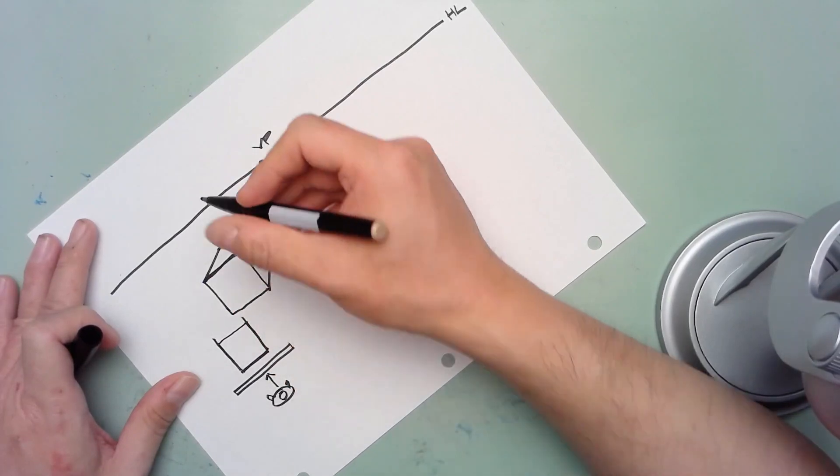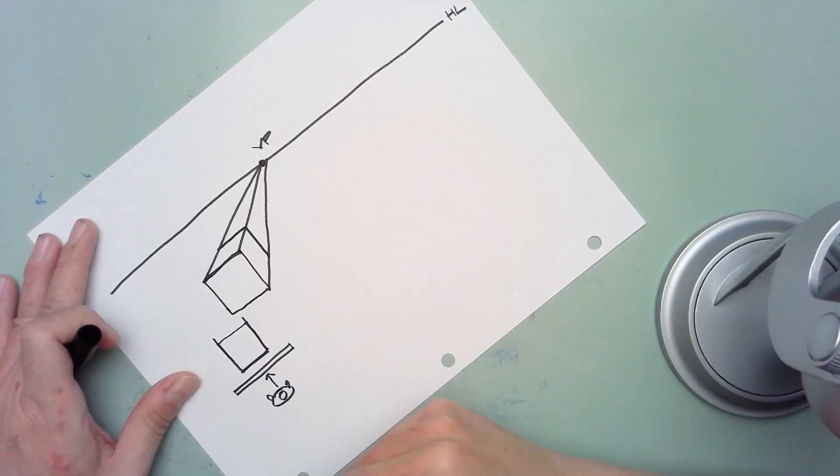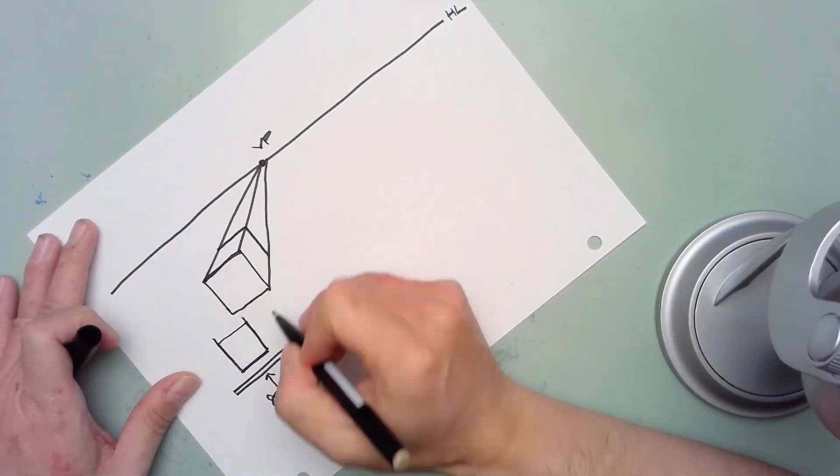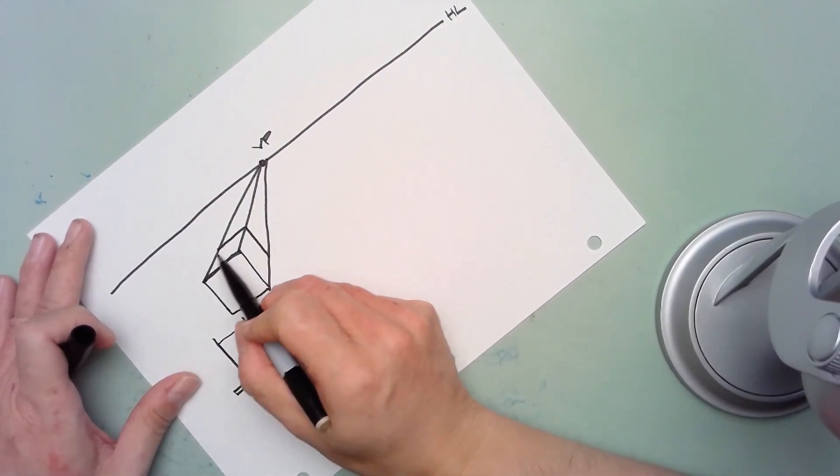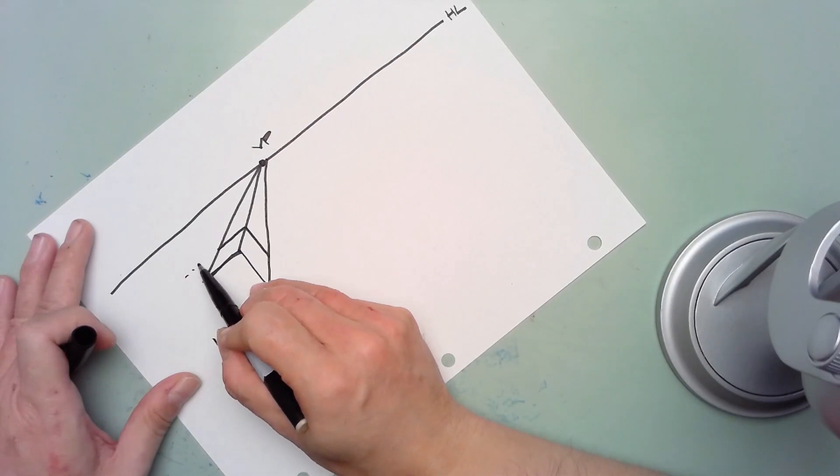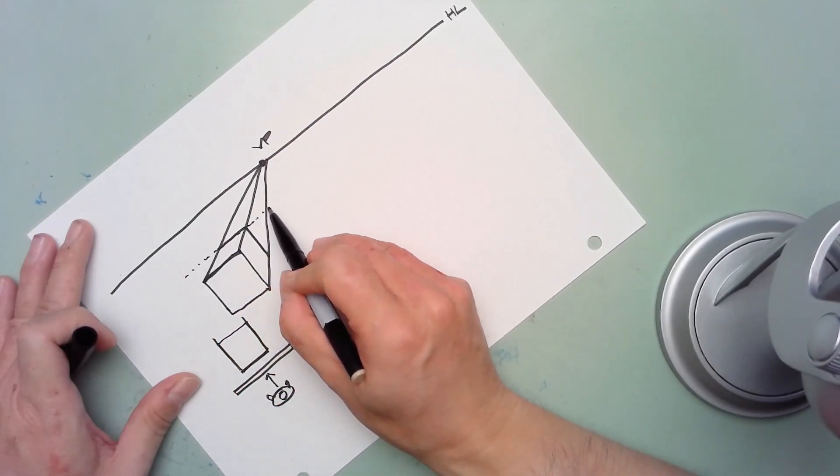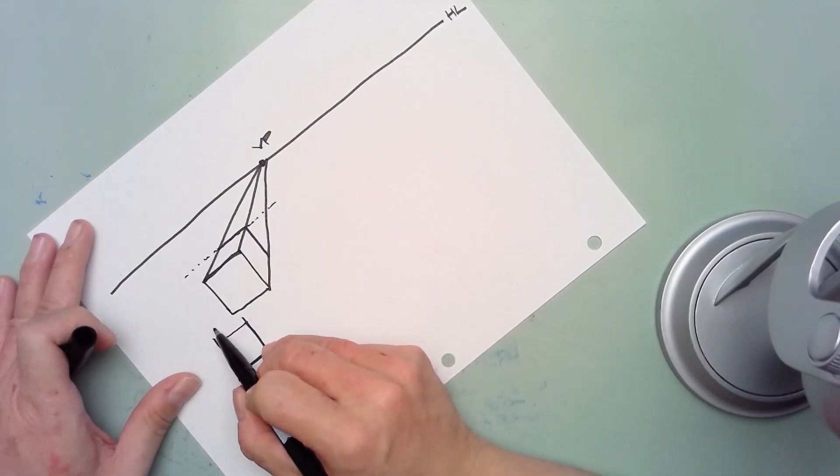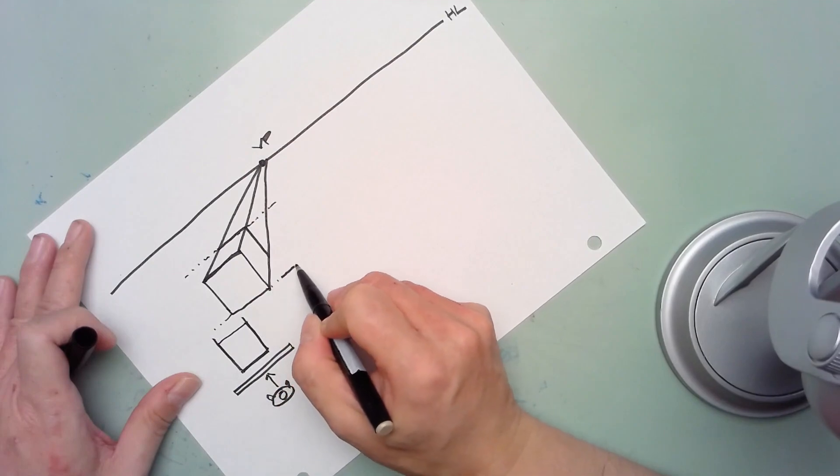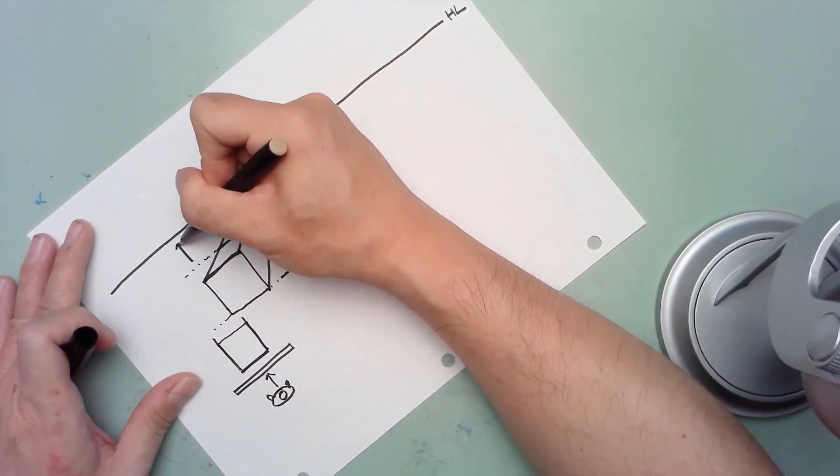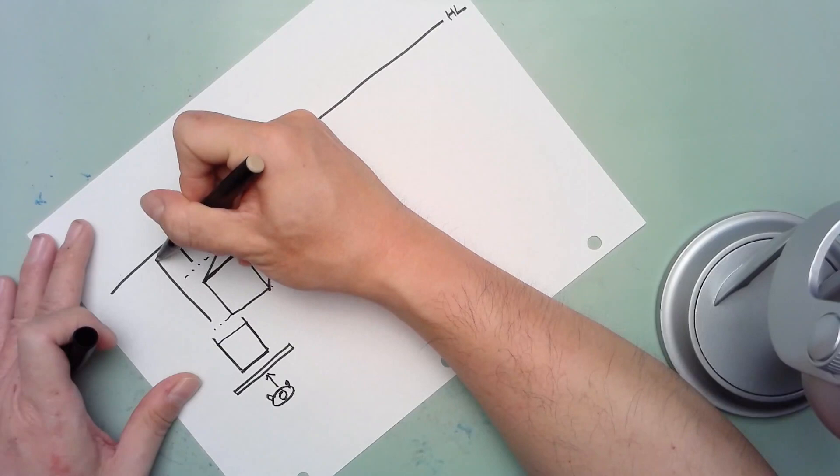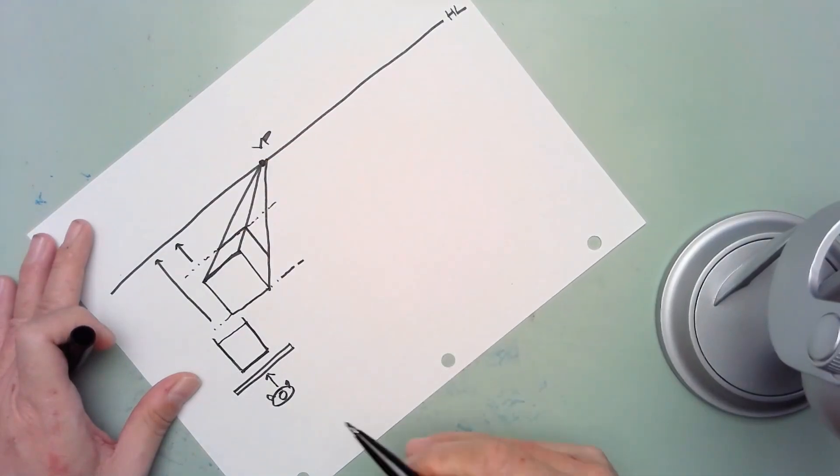The only thing you need to do now to complete this cube is to draw in the back edges. Do note that with a one-point perspective cube, your horizontal edges will all be parallel to your horizon line.